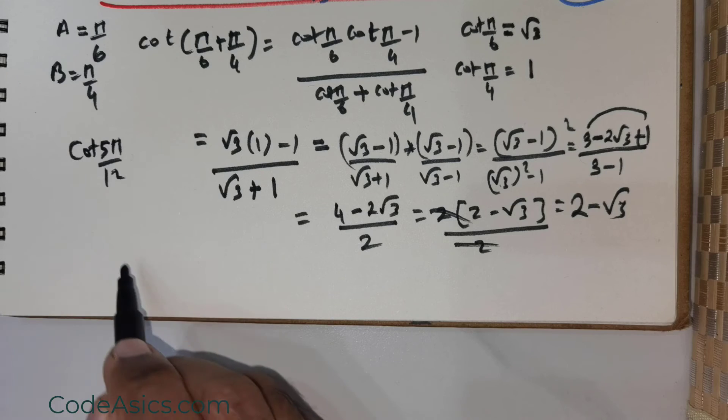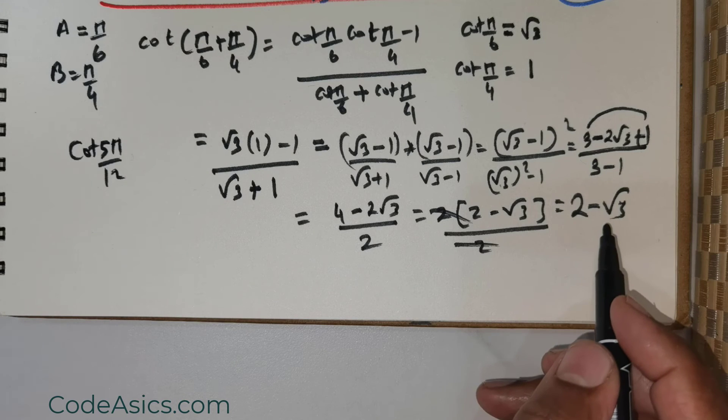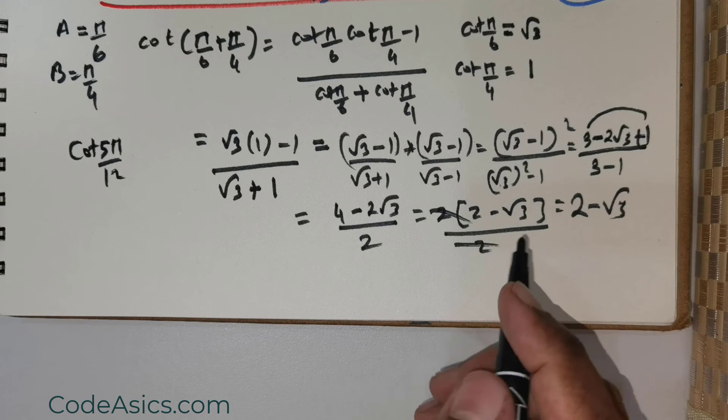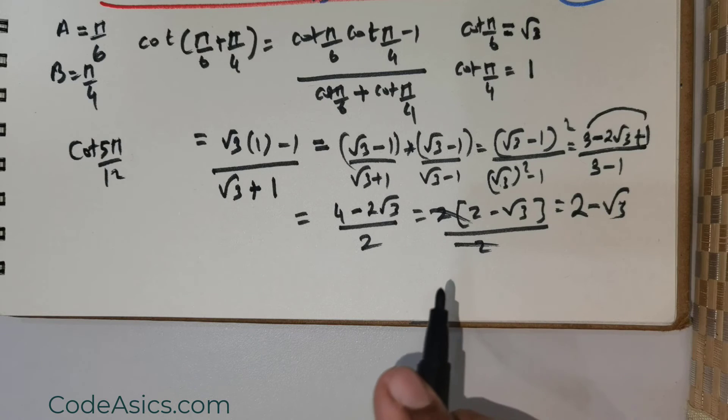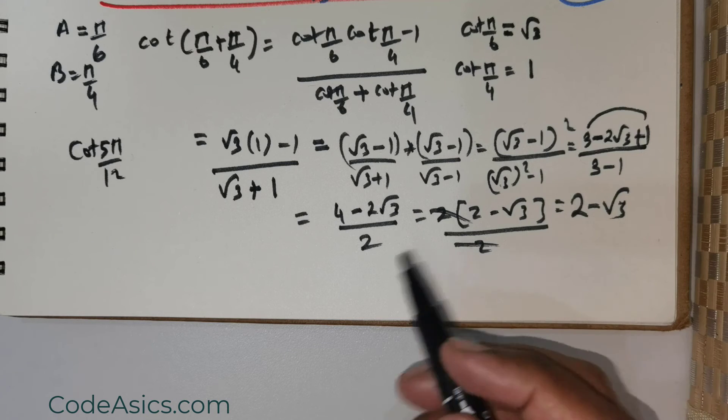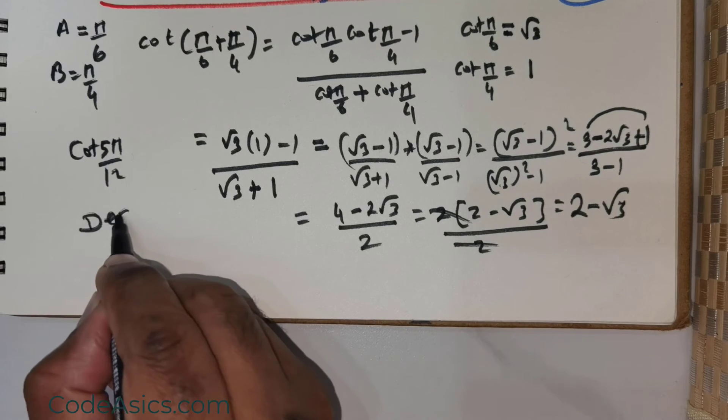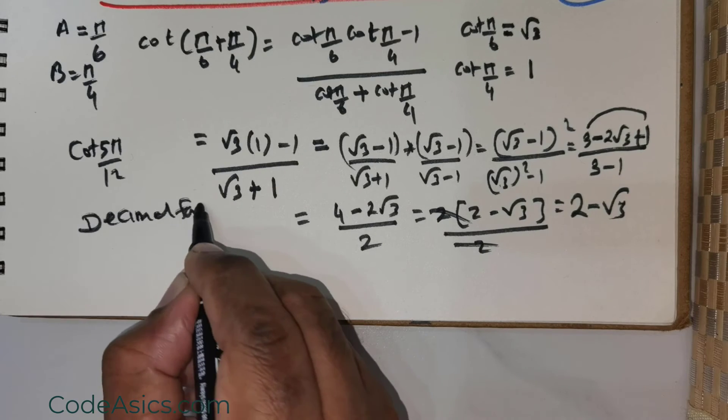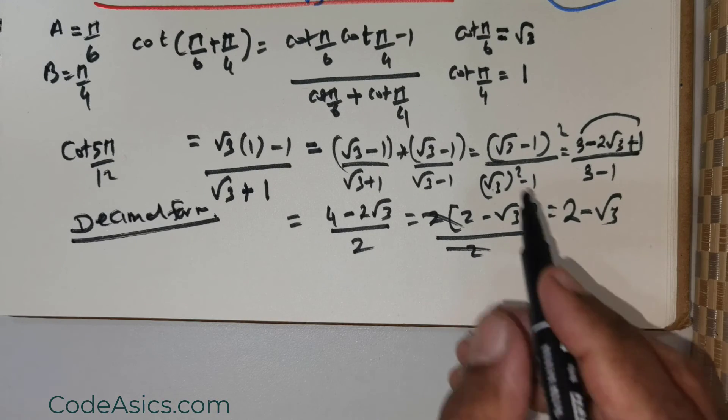Now this is without using calculators. You can go a step further in giving the numerical value. When I say numerical value, that is by getting rid of the √3. You can call this decimal form—the best way to say is decimal form.